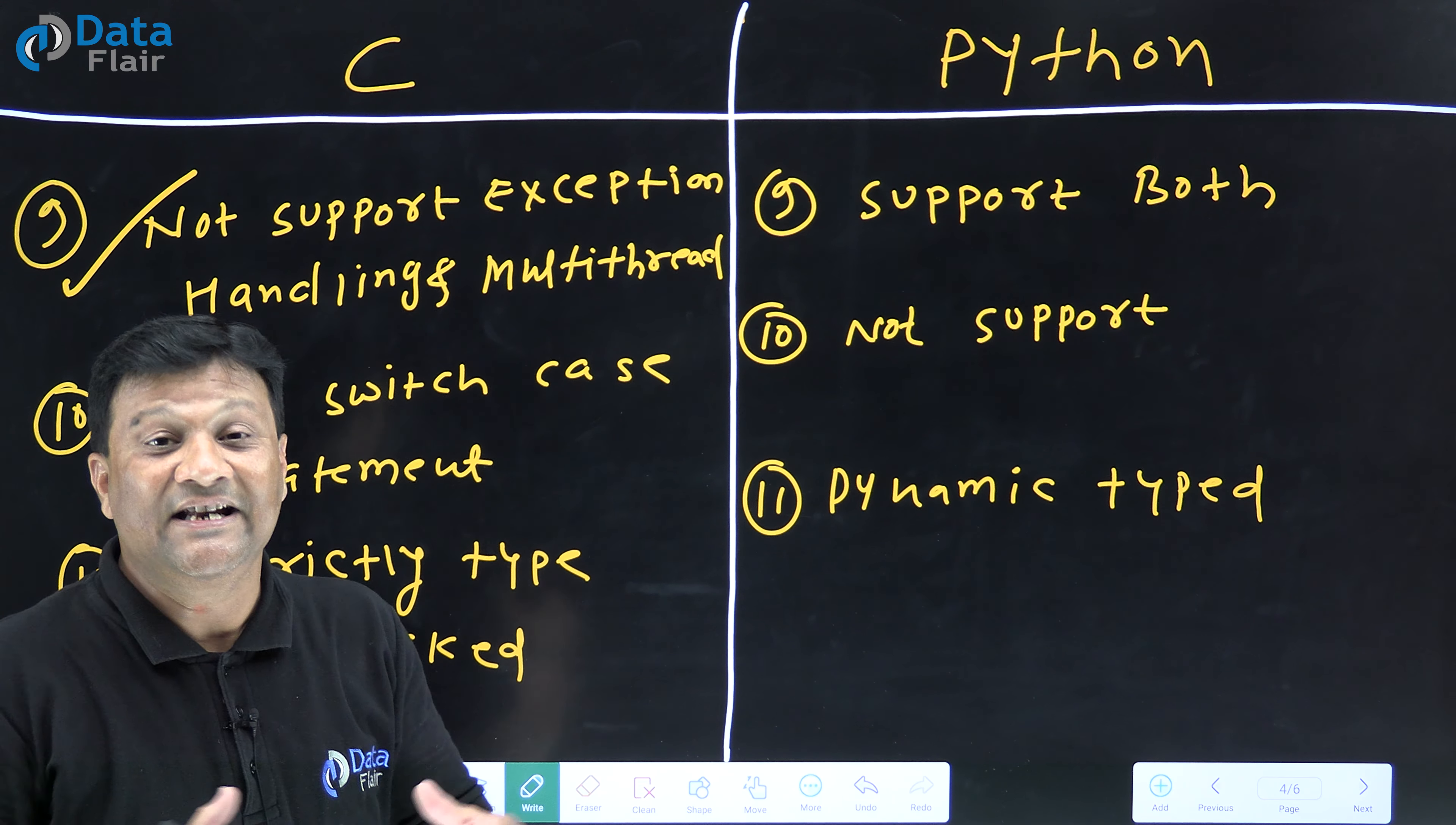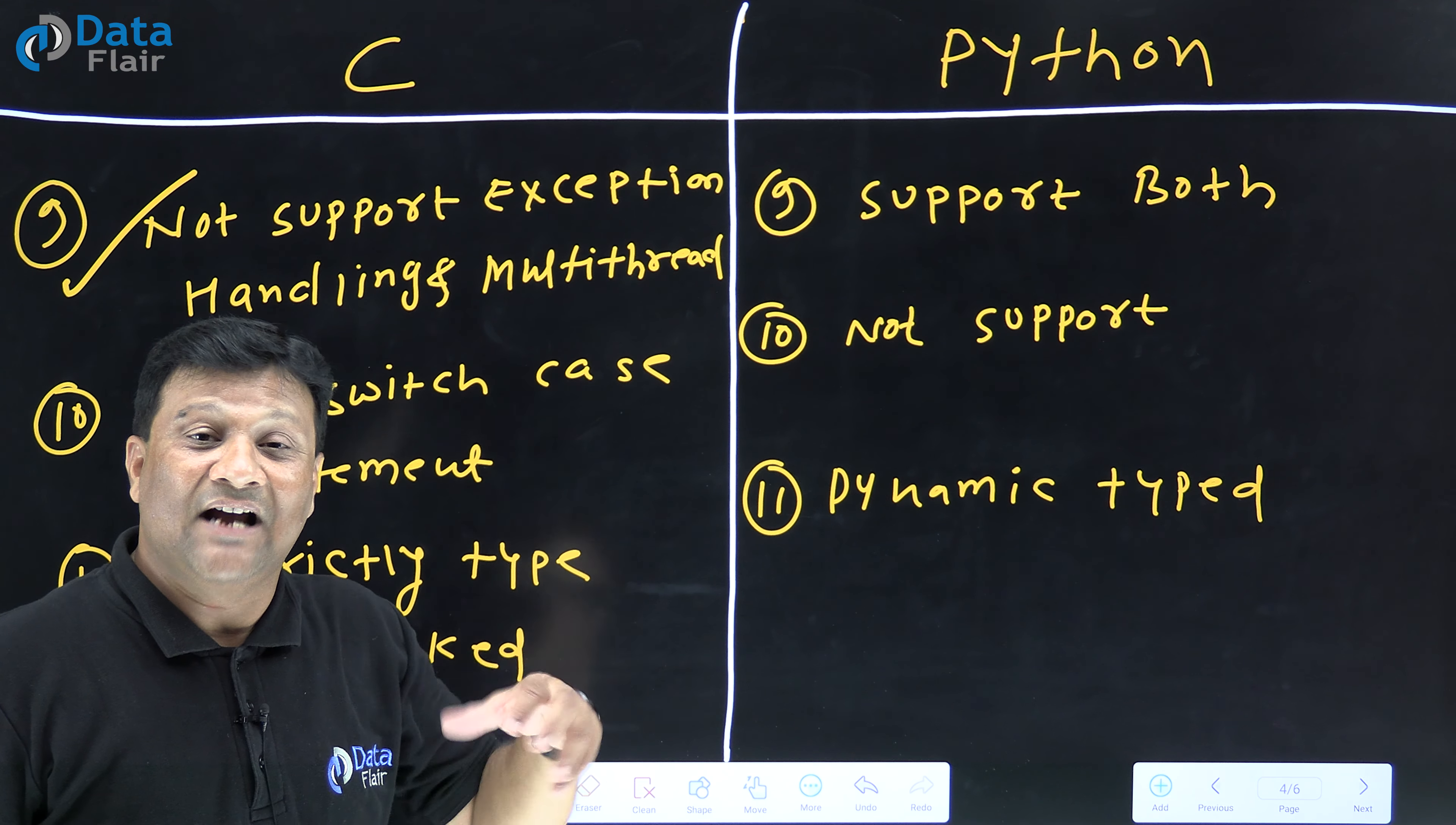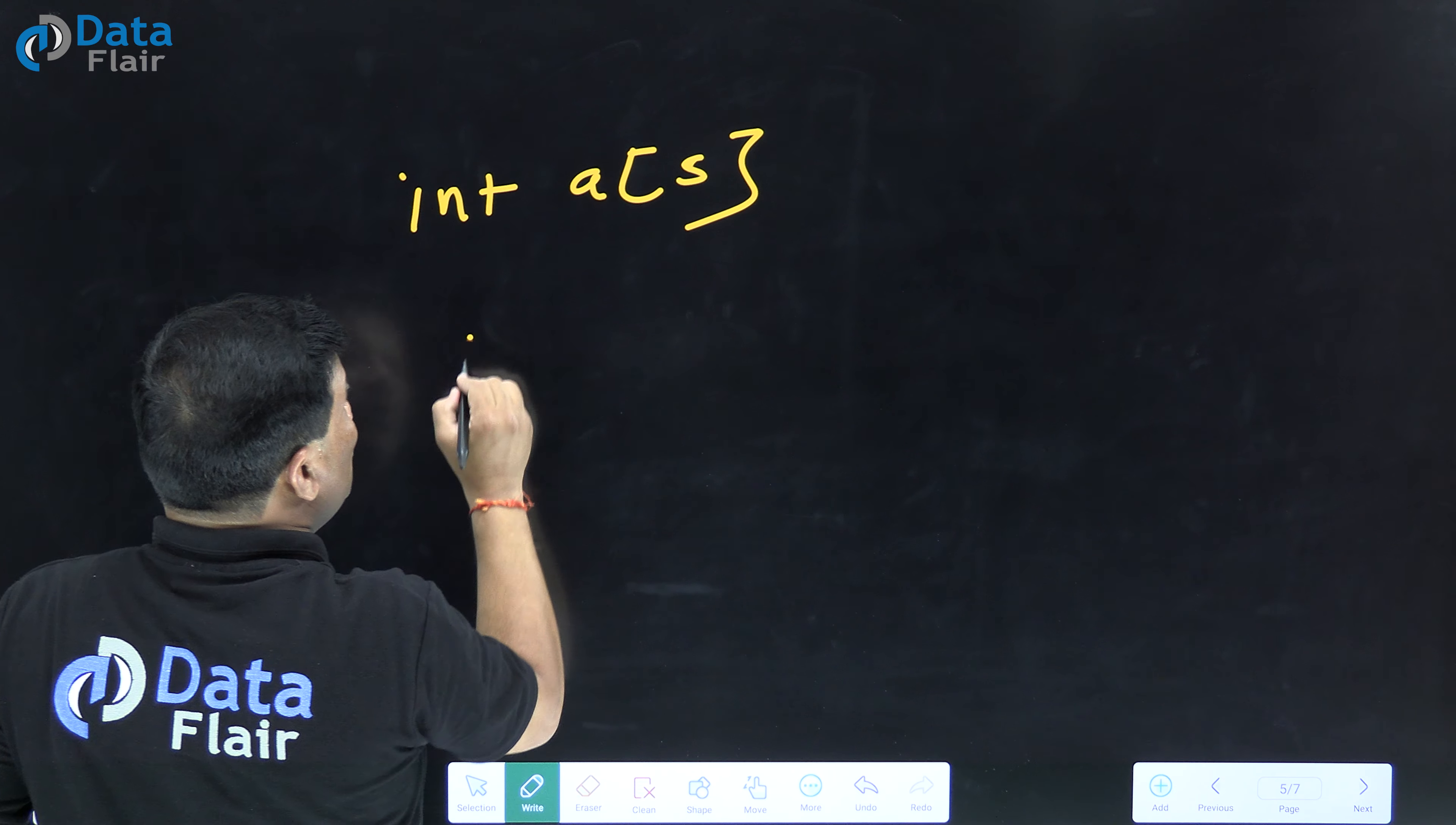But C doesn't have exception handling concept. Let me give you an example to understand this. C doesn't have exception handling content. For example, if you have seen a code where you declare an array of size five.